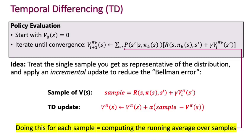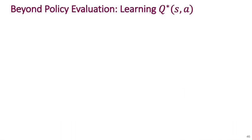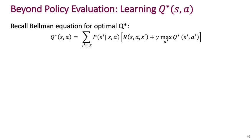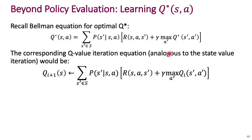Learning the optimal Q function amounts to being able to perform optimal actions in the environment, because all you have to do is pick the argmax of the Q function. Remember the Bellman equation for optimal Q-star: it takes an expectation over the transition probability of a quantity that includes the maximum over Q-star. This should remind you of what we did for policy evaluation. The Q-value iteration equation treats this Bellman equation as an update rule — your new estimate of optimal Q is just the right-hand side of the Bellman equation with your previous estimate of optimal Q plugged in for Q-star.